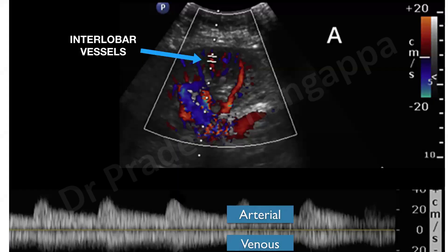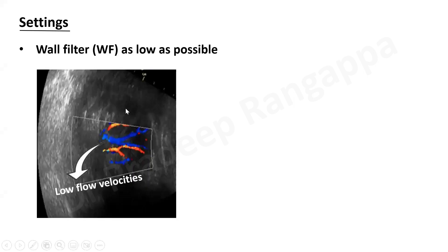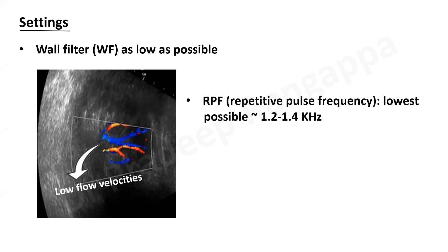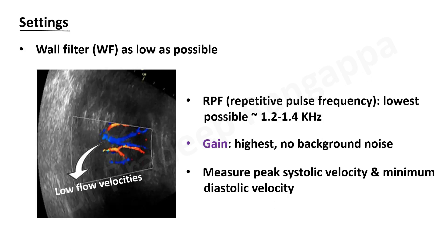The key aspect of doing this renal resistive index measurement is the settings. Unlike other ultrasound applications, there has to be some tweaking. In any ultrasound machine, there is something called a wall filter — it should be kept as low as possible when doing renal resistive index, because renal perfusion has low flow velocities and you need to pick up those. Then there is the pulse repetition frequency, which in our Philips machine should be kept as low as possible — 1.2 to 1.4 kilohertz — and the gain has to be kept highest to eliminate background noise.